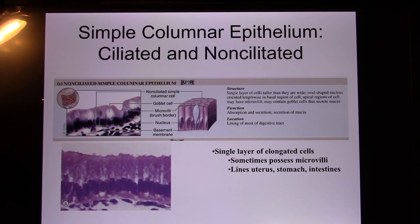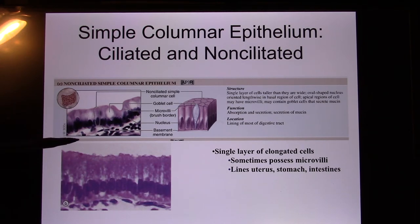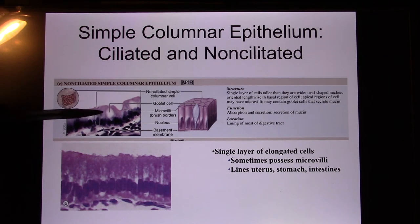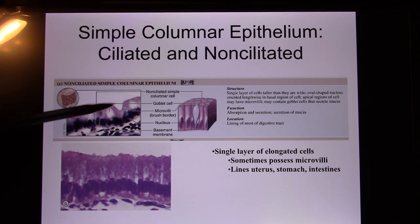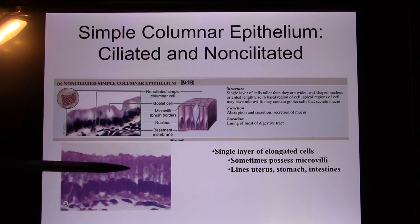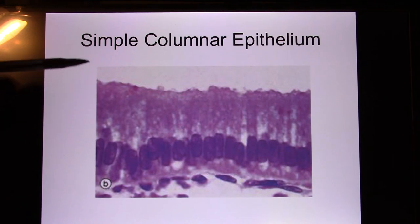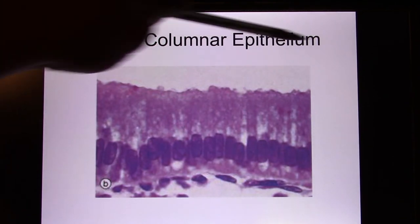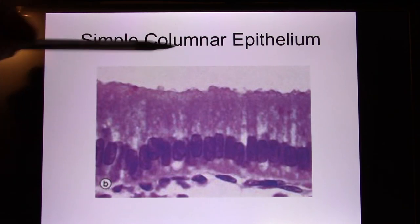Next is simple columnar epithelium — one layer, tall cells. You find it in the digestive system, particularly the small intestine. They often have microvilli and can be ciliated or non-ciliated. Goblet cells, which produce mucus, are also present and found in large numbers in the large intestine. The nuclei line up together, and it is one layer of long columnar cells — simple columnar.